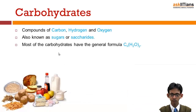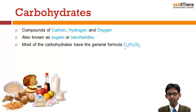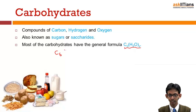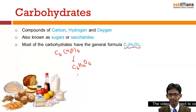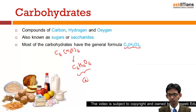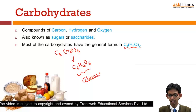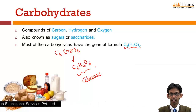Carbohydrates are chemically compounds of carbon, hydrogen and oxygen, and they are sometimes also known as sugars or saccharides. The general formula can be represented as Cx(H2O)y. For example, if we have 6 carbon atoms, the formula becomes C6(H2O)6, which simplifies to C6H12O6 — the formula of glucose and also fructose.